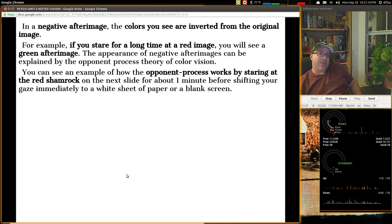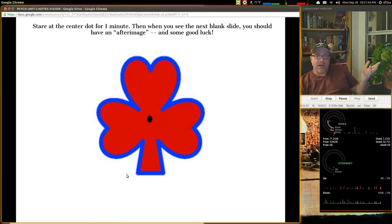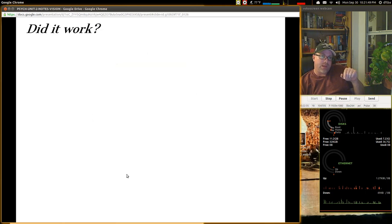Here in a negative after image, the colors you see are inverted from the original image. So, for example, you stare a long time at a red image, you'll see the green after image. The appearance of the negative after images can be explained by the opponent process. I think these two slides are flipped, but it doesn't really matter. I talked you through the process already. So, you can see an example of how this works by staring at the red shamrock on the next slide. I need to do this for about a minute. So, pause it for a minute, stare at the red shamrock if you want to try this one, and then shift your gaze immediately to the white sheet of paper or the blank screen that I've provided. So, here you go. Red shamrock. One minute. Go.